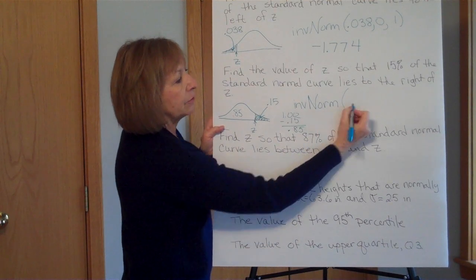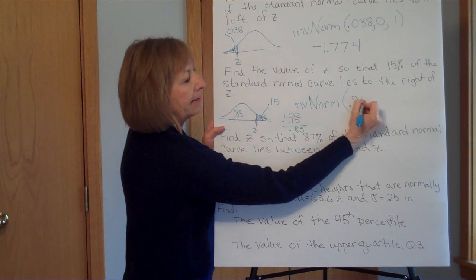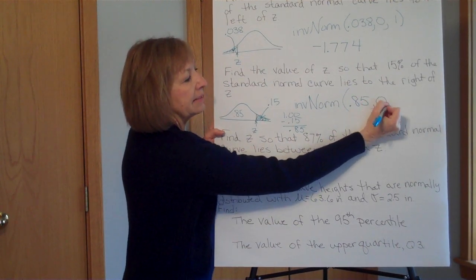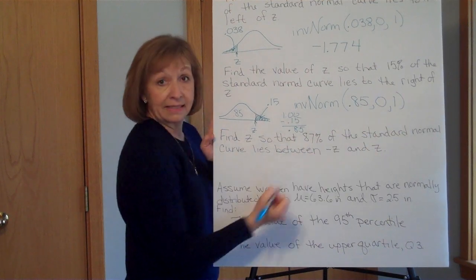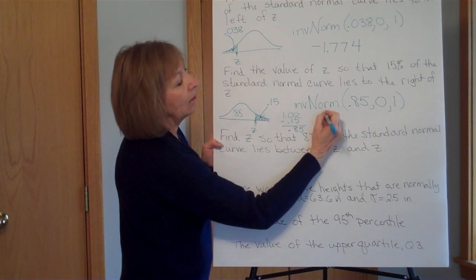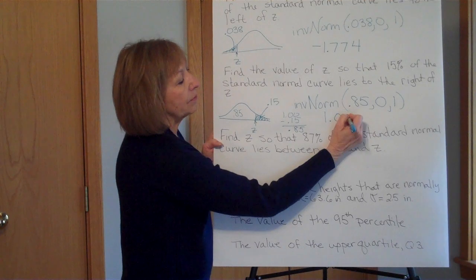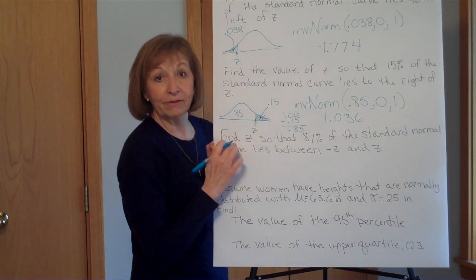So my inverse norm is 0.85, the mean of the z's is 0, the standard deviation of the z's is 1, and I get 1.036 for that z-score.